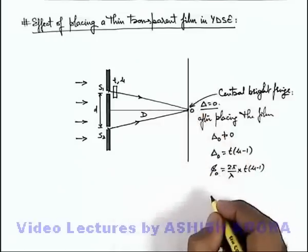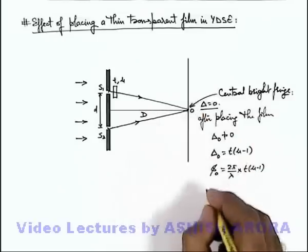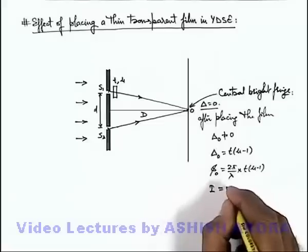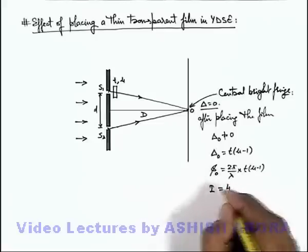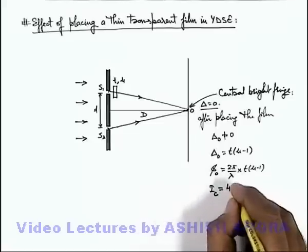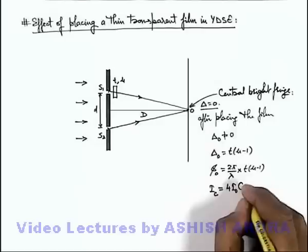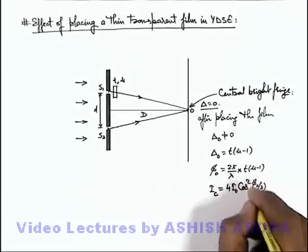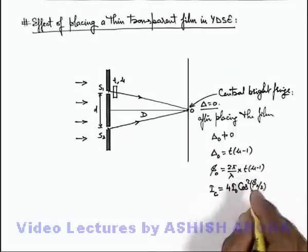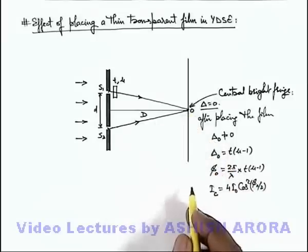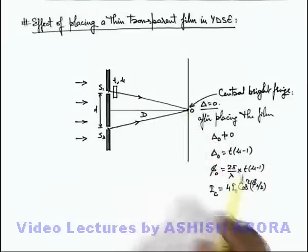Now if we know the path difference at point O, we can find out the phase difference at point O, which is given by (2π/λ) multiplied by the path difference t(μ − 1). And if we know the phase difference at point O, the resulting intensity at the centre of the screen is 4I₀ cos²(φ₀/2), where φ₀ is the phase difference at point O.